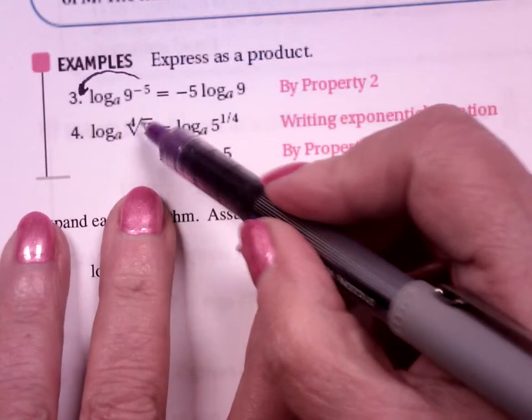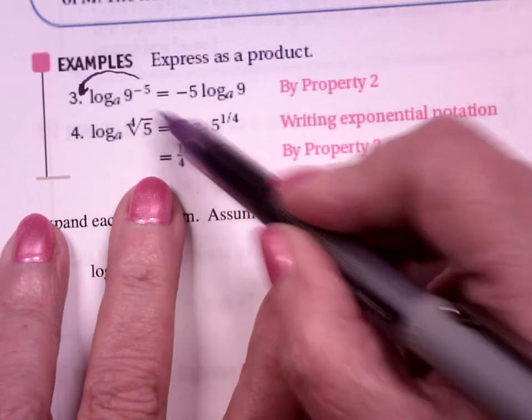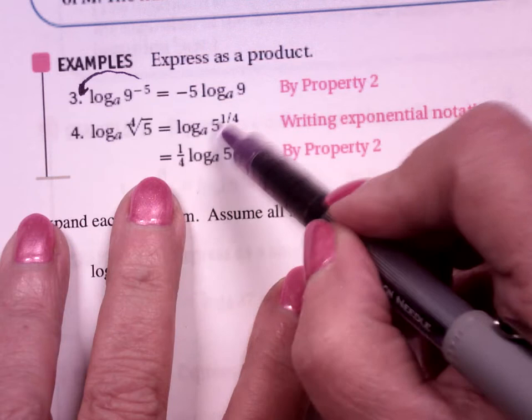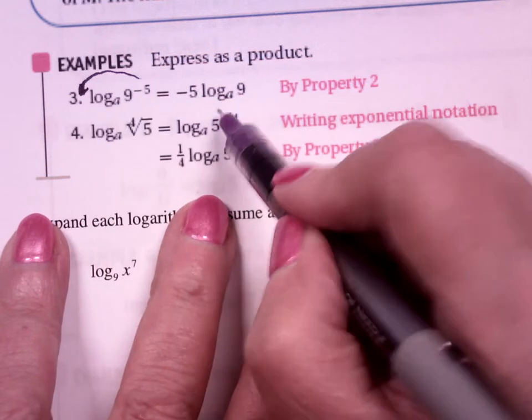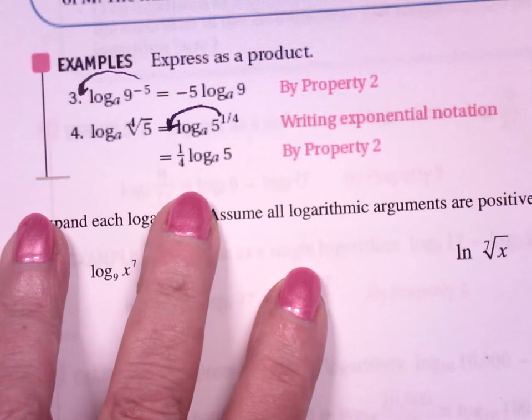If I have log base a of the 4th root of 5, remember like we had to on Friday, we had to write it as a fractional exponent. This is 5 to the 1/4 power. Now you can bring the 1/4 down in front. It's 1/4 log base a of 5.